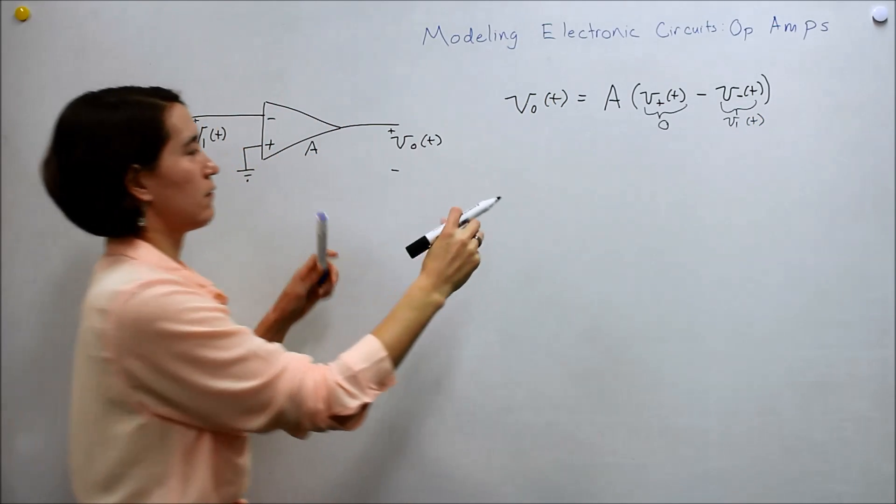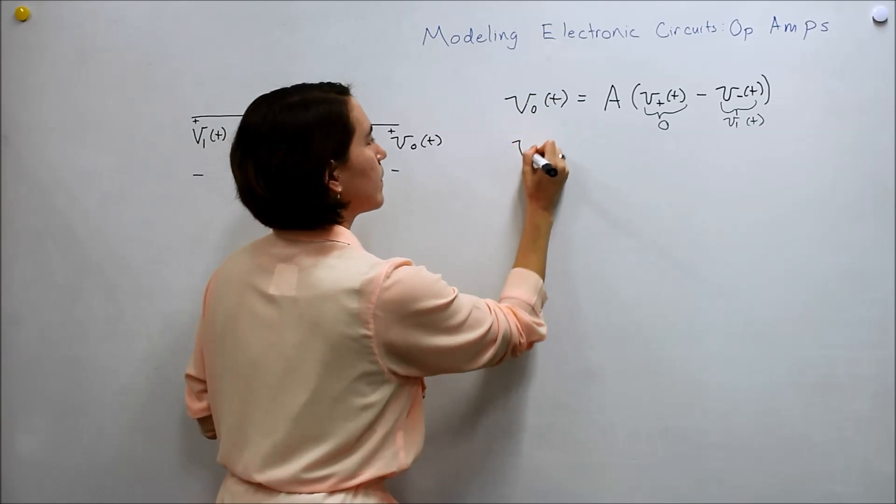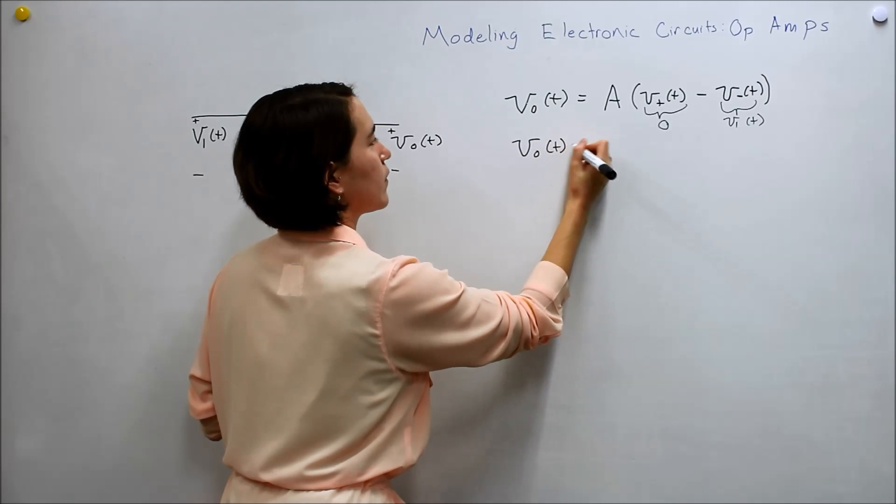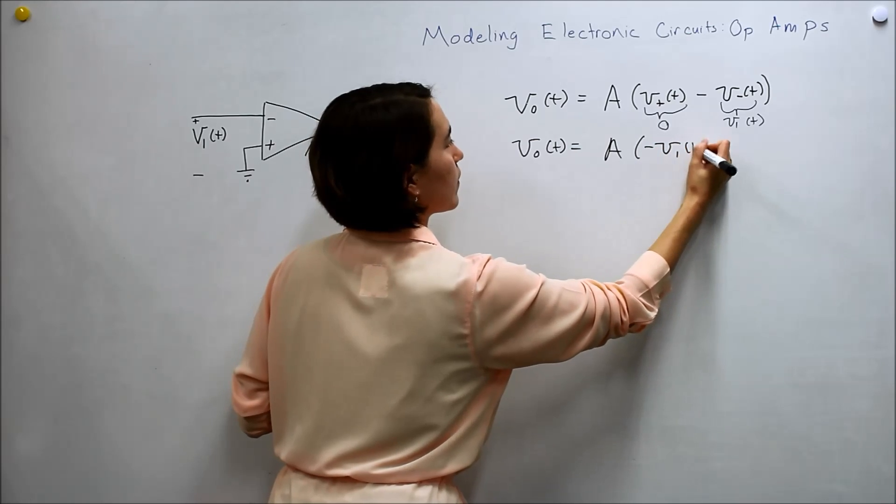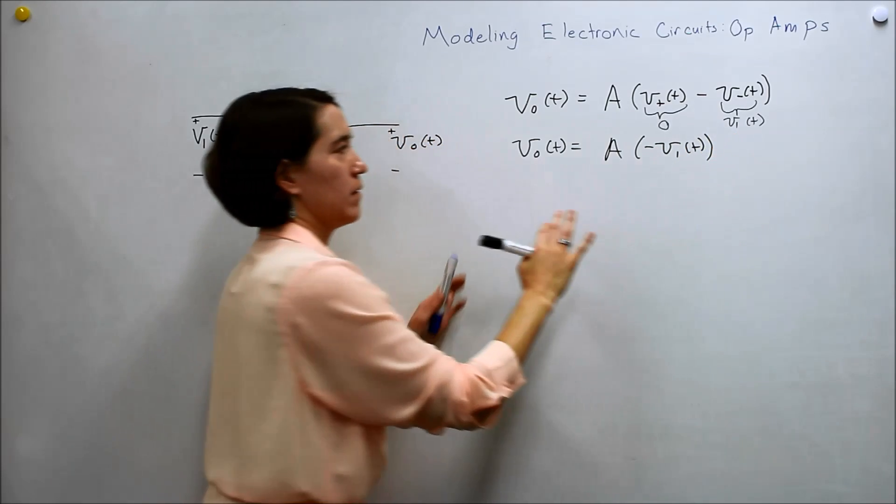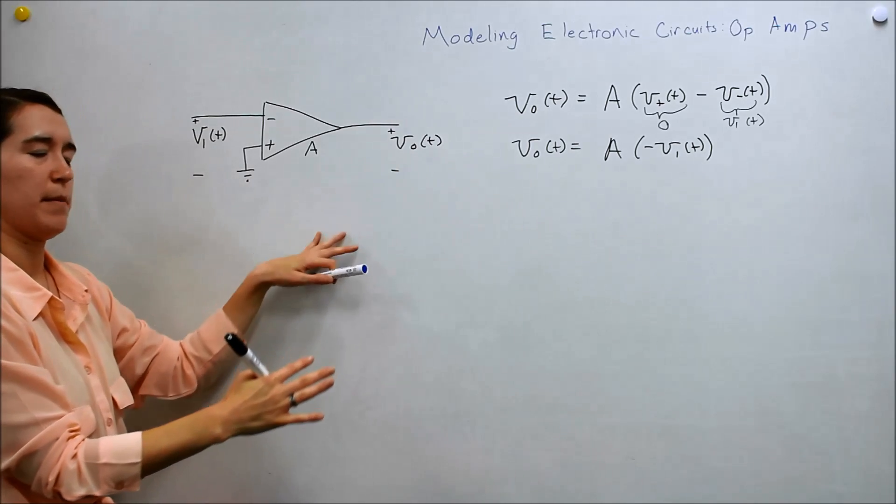Alright, so if we write that out, we have Vout equals A times negative V1 of T. So that's just our general inverting amplifier.